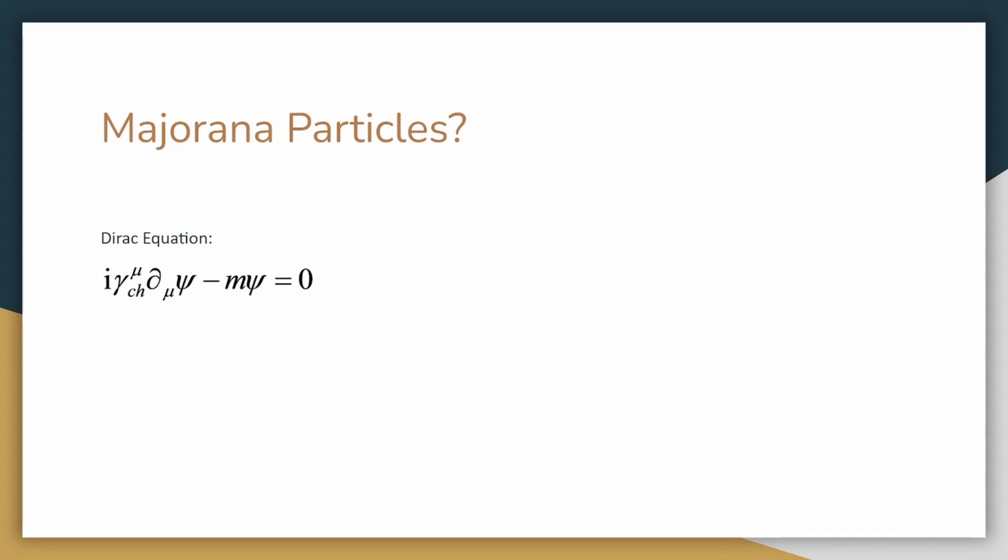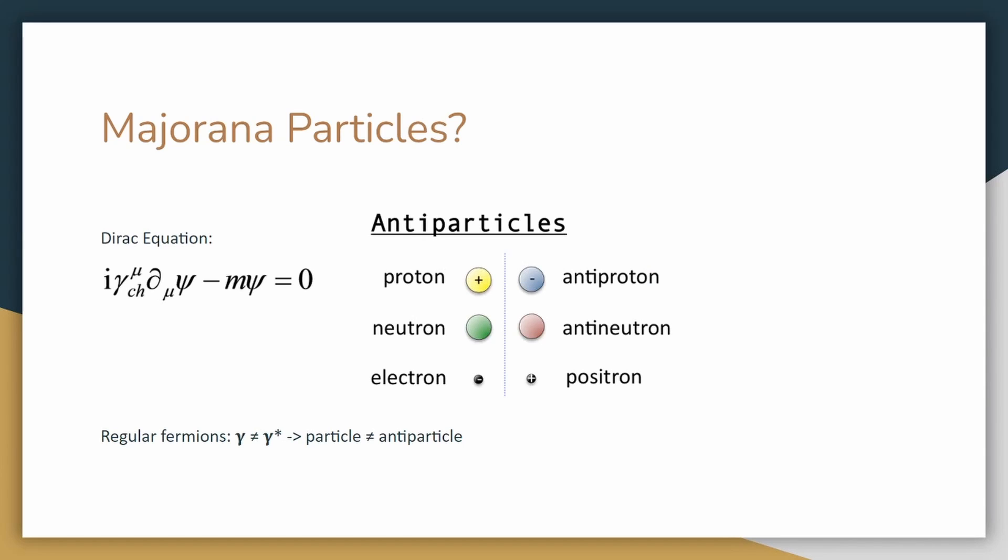This is an interesting alternative to the typical solution of the Dirac equation. Solutions to the Dirac equation usually represent Fermionic particles such as electrons, protons, and neutrons that have their respective antiparticles. This is because the solutions are complex and hence the conjugate solutions which represent the antiparticles are also unique solutions.